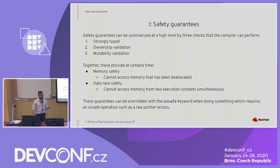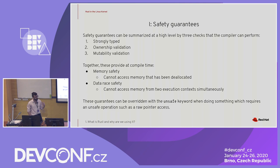Rust is strongly typed, so it's able to do some pretty intense type validation. It has ownership validation — at a high level, what scope owns this data at what time. It's also able to do mutability validation, which says when we have references, which of these references can mutate at a given time. Together these provide some pretty attractive guarantees: memory safety with no dangling pointers in safe Rust, and data race safety so we can't access data from two locations at any one time for write access. These guarantees can all be overridden with the unsafe keyword.